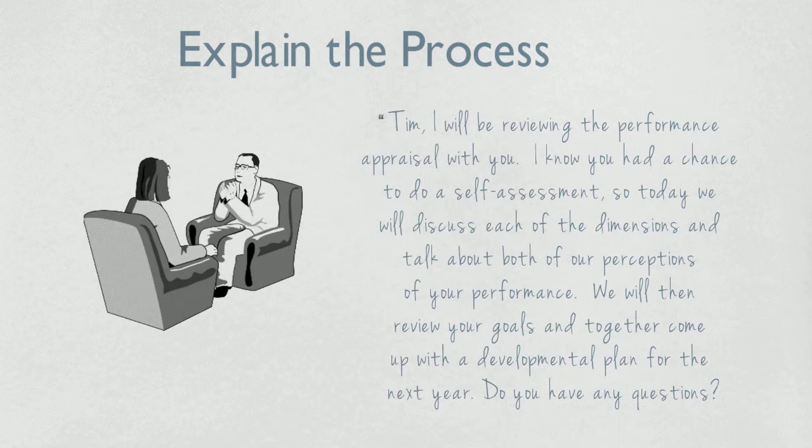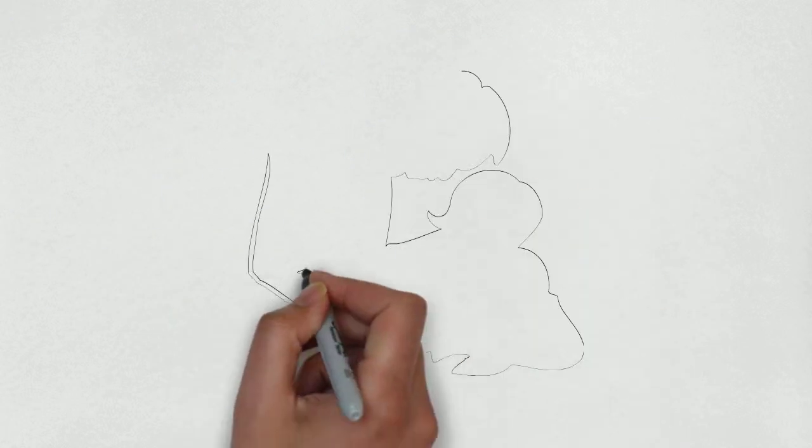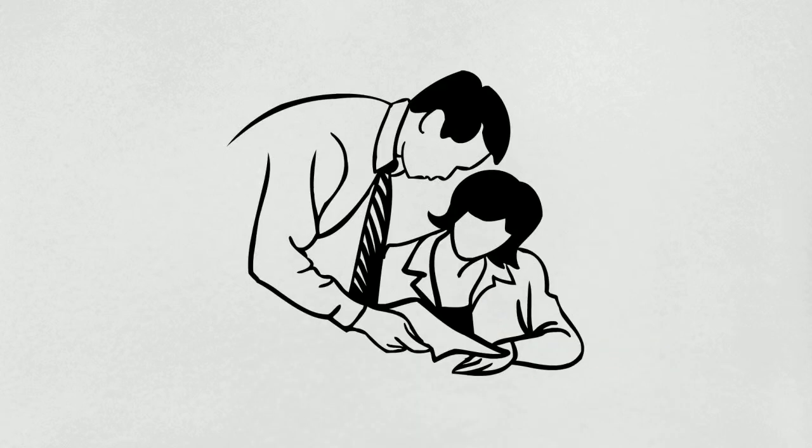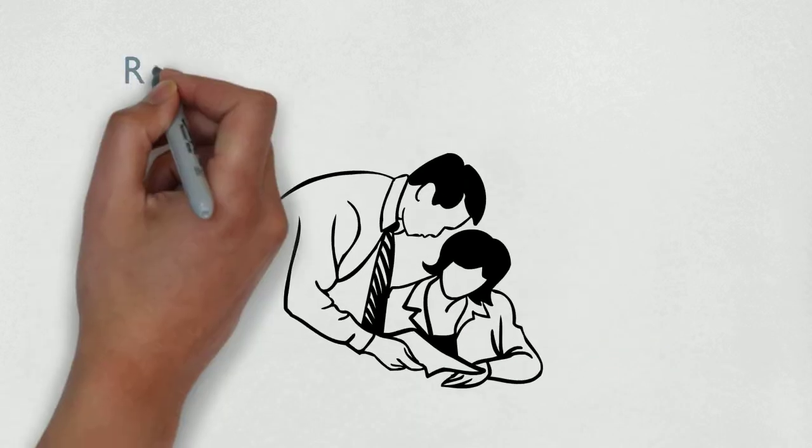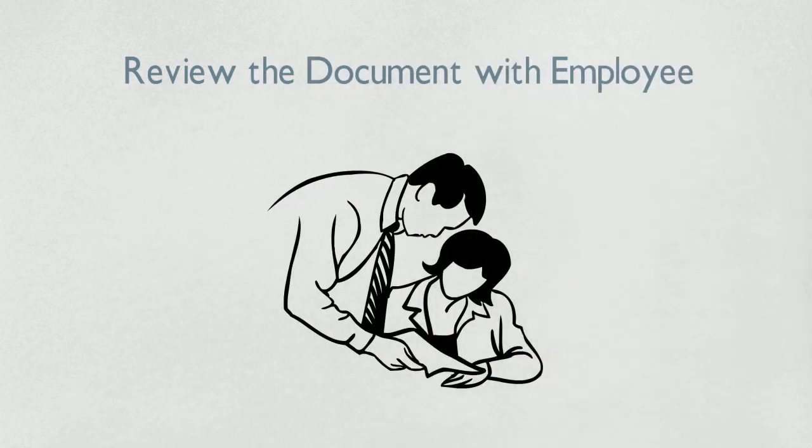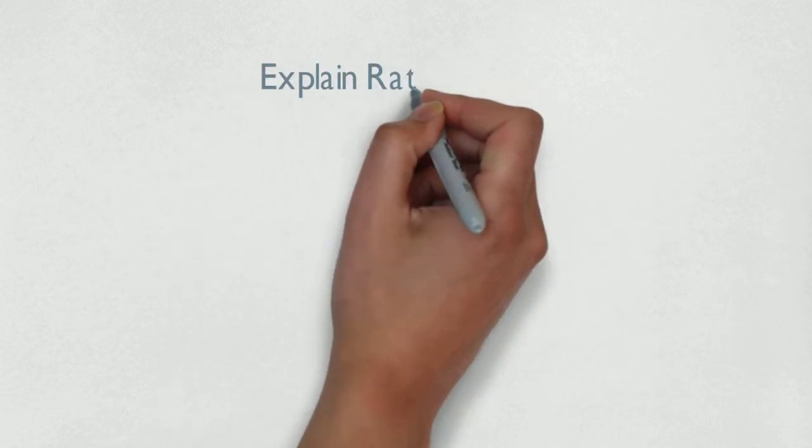This preliminary conversation helps get you both on the same page. Review the appraisal with the employee and explain any parts of the form that he or she may not understand. This is particularly important if this is the first time the employee has had an evaluation. For example, explain the rating scale and the dimension definitions.